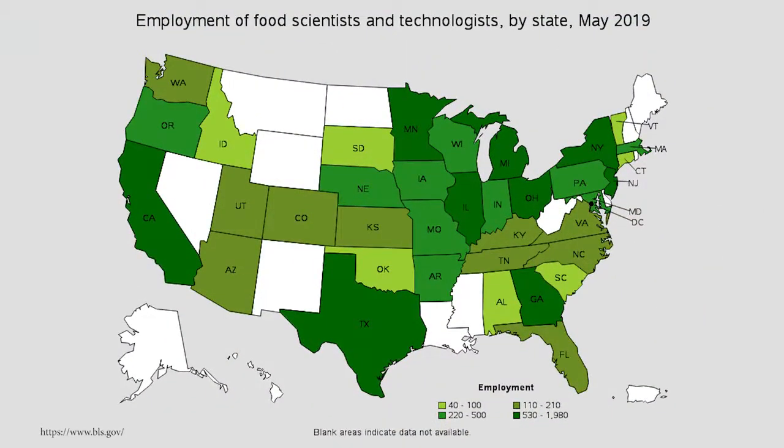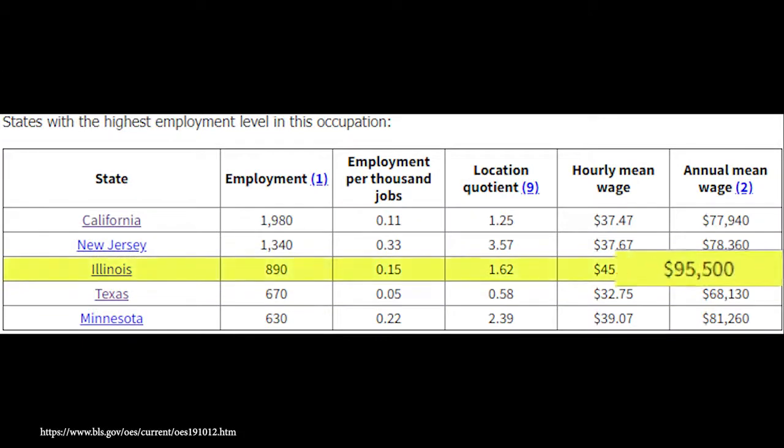When it comes to being a food scientist, for instance, you might want to make sure that you look at the region that you want to live in. For some reason, food scientists that live in Illinois make around $95,000 a year, whereas ones that live in Texas only make around $68,000. So there's a huge discrepancy there.